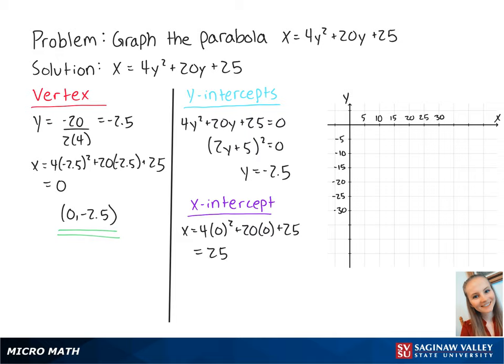Now that we have the intercepts y equals negative 2.5 and x equals 25, we can plot the points on the graph. The vertex and the y-intercept are the same point at 0, negative 2.5, and the x-intercept is at 25, 0.